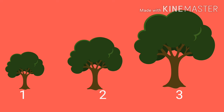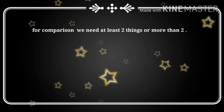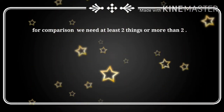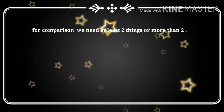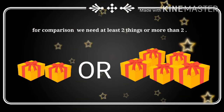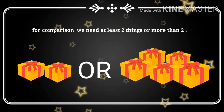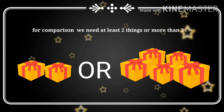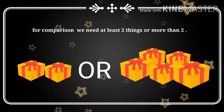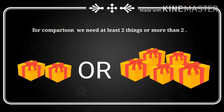Another example: there are trees. The first tree is tall, but the second one is taller than the first tree, and the third tree is tallest of all other trees. Always remember that for comparison we need at least two things or more than two — that means compare karne ke liye kam se kam hamare paas do vastu honi chahiye; agar ek hi vastu hai toh hum compare nahi kar sakte.